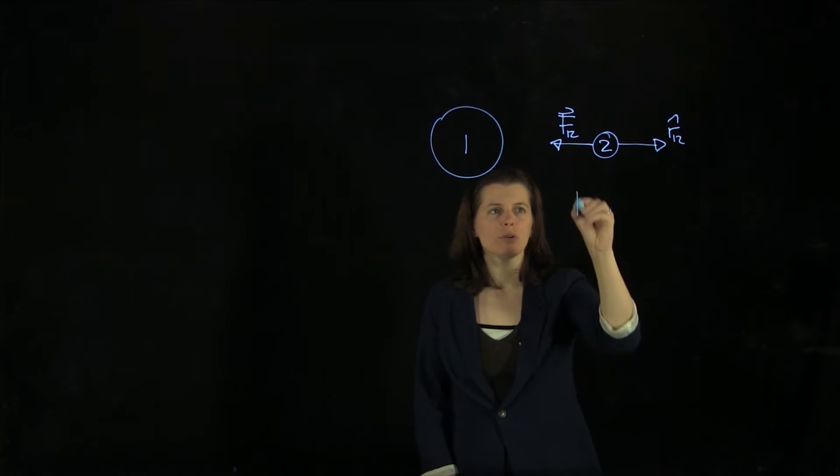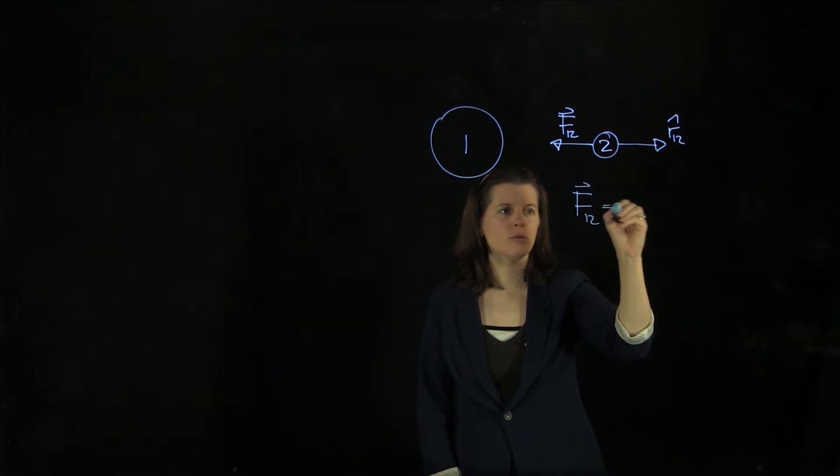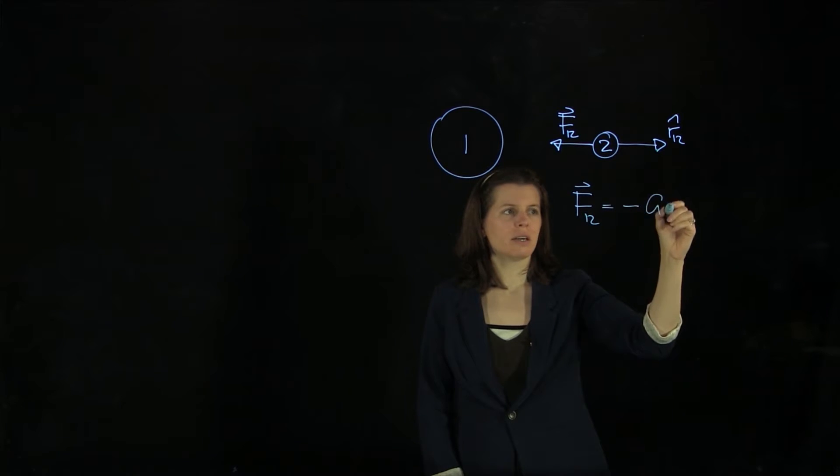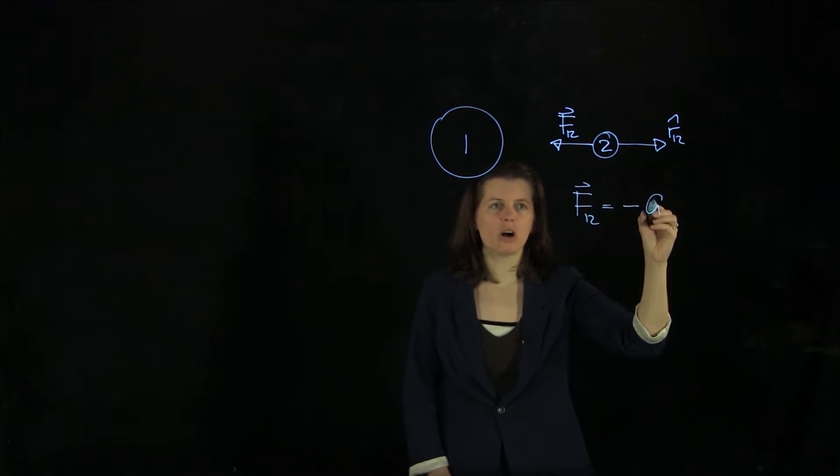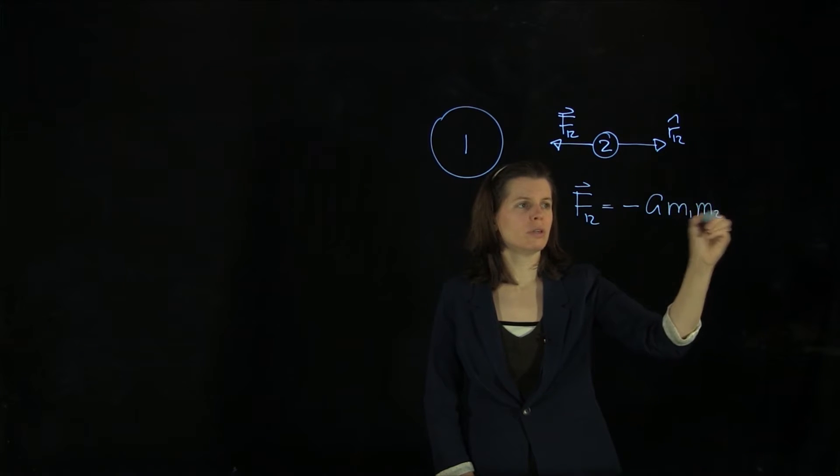For that, we can write down the universal gravitational law: F₁,₂ equals minus G, the gravitational constant, m₁ m₂ over r₁,₂ squared.